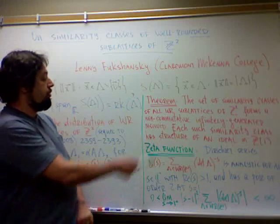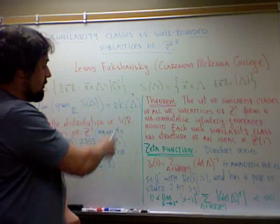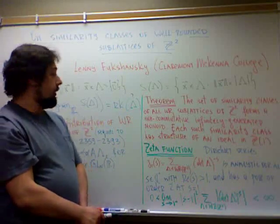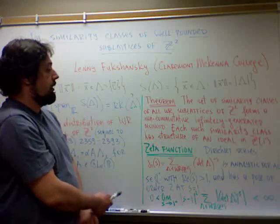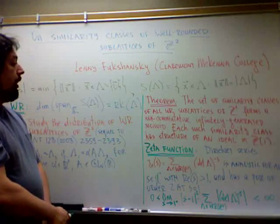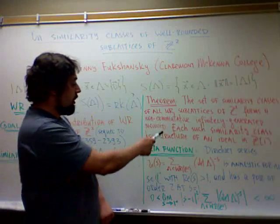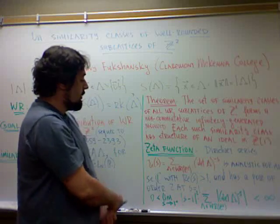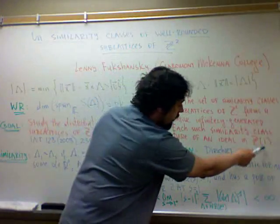And then the operation on this monoid is defined on Pythagorean triples and then we pull it back under this bijection. It also turns out that each such similarity class has structure of an ideal in Gaussian integers.